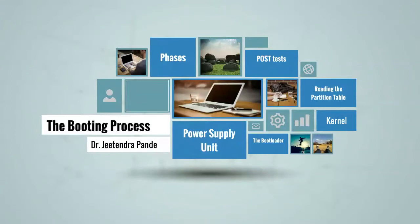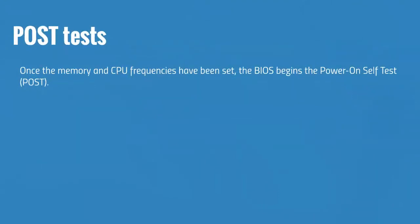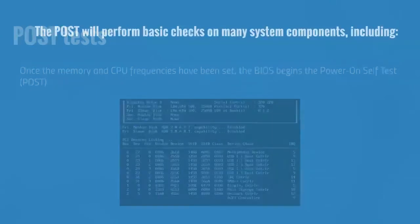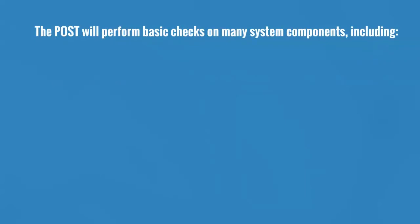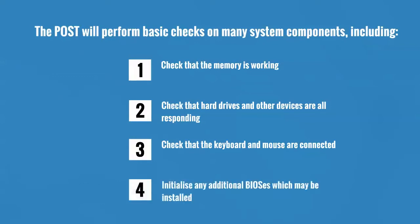The next step is the POST test. Once the memory and CPU frequency have been set, the BIOS begins the power-on self-test, or POST. The POST will perform basic checks on many system components, including: checking that the memory is working, checking that hard drives and other drives are all responding, checking that the keyboard and mouse are connected, and initializing any additional BIOSes which may be installed.